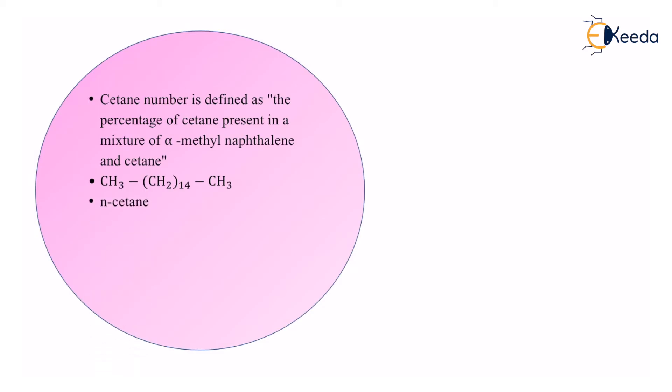This is known as n-cetane. N means it's a straight chain. Cetane number over here is 100, that means 100 percent of it is made up of cetane.